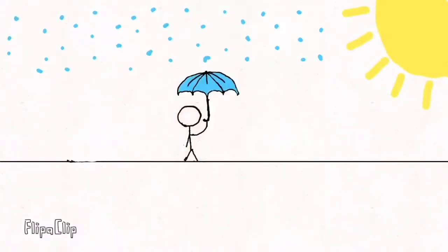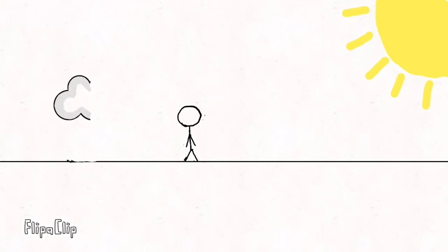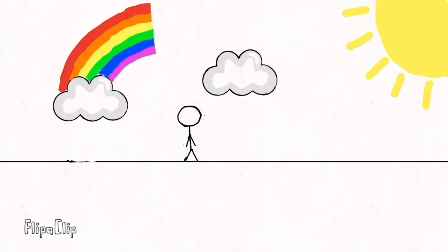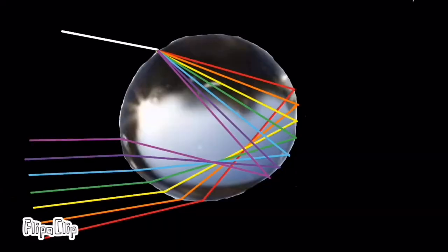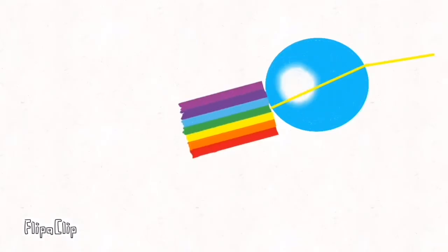Refraction can also occur naturally in our everyday lives. Refraction is used to make some natural optical phenomena like rainbows. Rainbows use refraction when sunlight passes through rain droplets and is refracted. This causes the light to split into its colors.